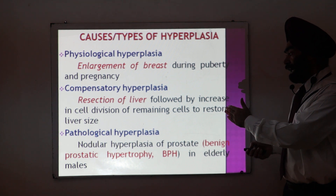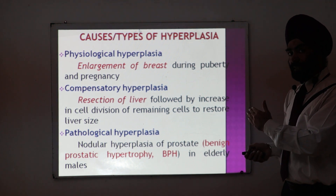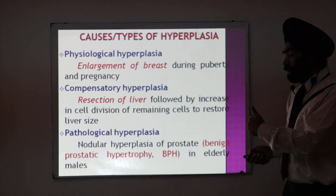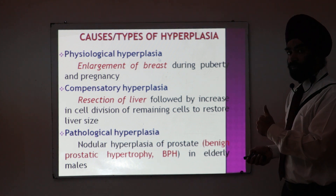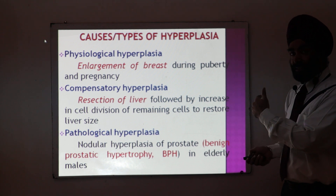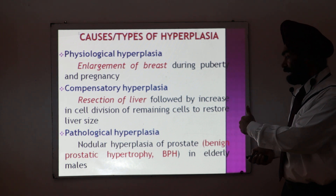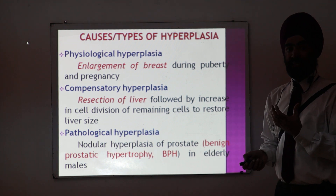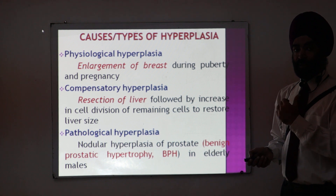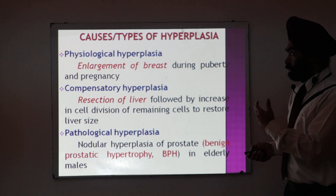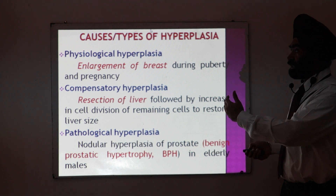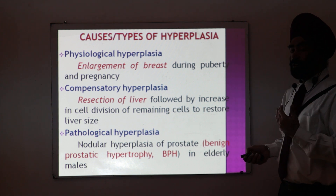Third is pathological hyperplasia. One example is nodular hyperplasia of the prostate, also called benign prostatic hypertrophy — in short, BPH. It is a disease of aged males where the size of the prostate gland increases, which ultimately produces urinary troubles. These are the different types of hyperplasia: physiological, compensatory, and pathological.